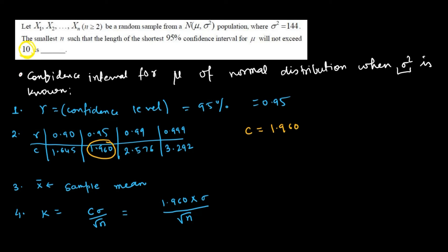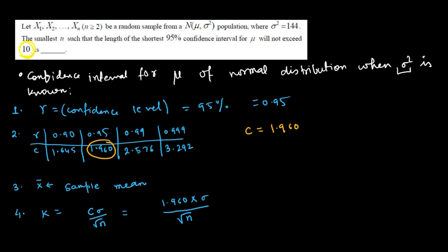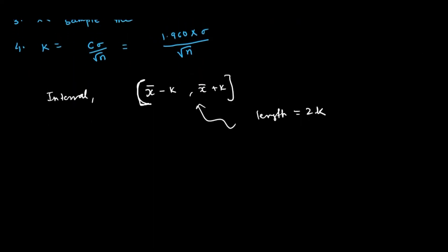Now you are asked what is the value of n. So 2 sigma c by square root n is less than or equal to 10. So if you square it, we are getting 4 c square sigma square by n is less than 100.